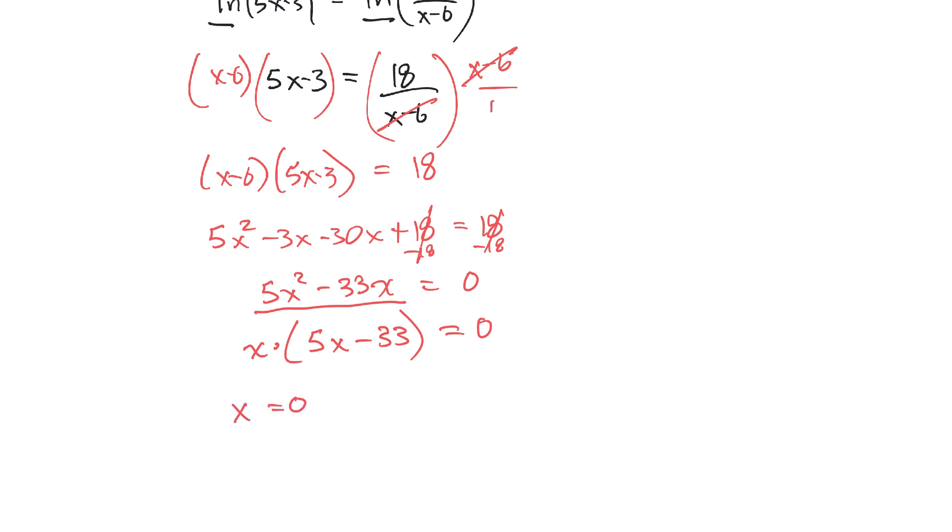So either x is 0 or 5x minus 33 is 0. Solving this one, I'll have 5x equals 33, so x equals 33 over 5.